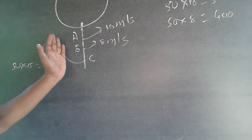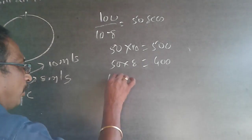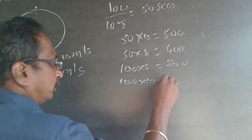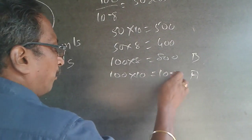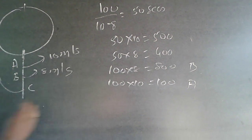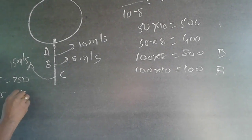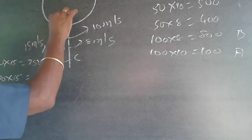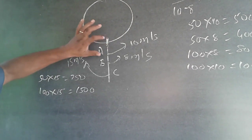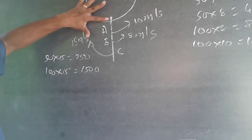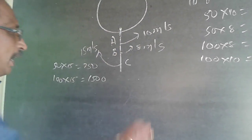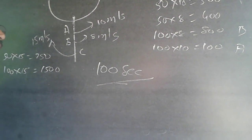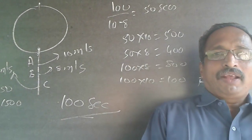So we find when A and B will meet again — that is after another 50 seconds, making it 100 seconds total. At 100 seconds: B runs 100 × 8 = 800 meters (8 rounds), A runs 100 × 10 = 1000 meters (10 rounds), and C runs 100 × 15 = 1500 meters (15 rounds). All three arrive back at the starting point. So all three will meet exactly after 100 seconds. The answer is 100 seconds.